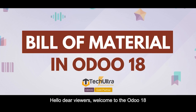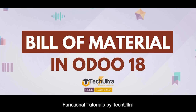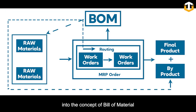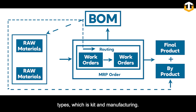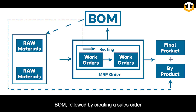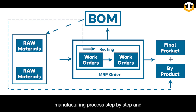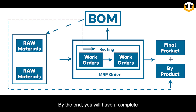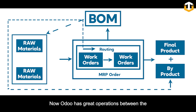Hello dear viewers, welcome to the Odoo 18 functional tutorials by Tech Culture Solutions. In this video we'll dive into the concept of Bill of Material configuration and explore its two main types: kit and manufacturing. We'll walk you through the entire process starting with how to configure a BOM, followed by creating a sales order for the product, then covering the manufacturing process step by step, and finishing with the delivery process.